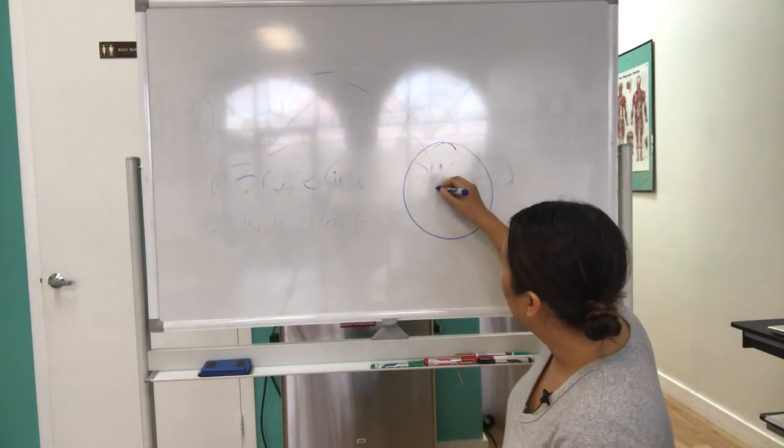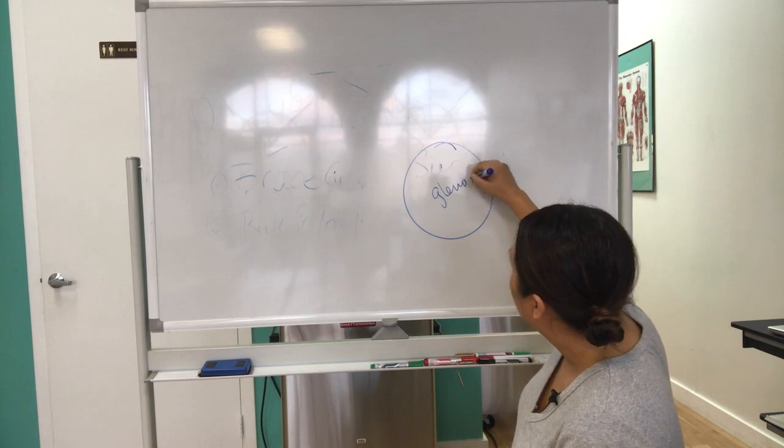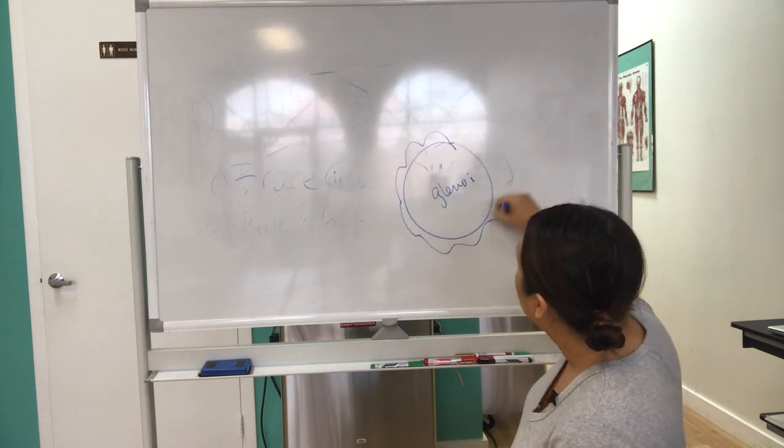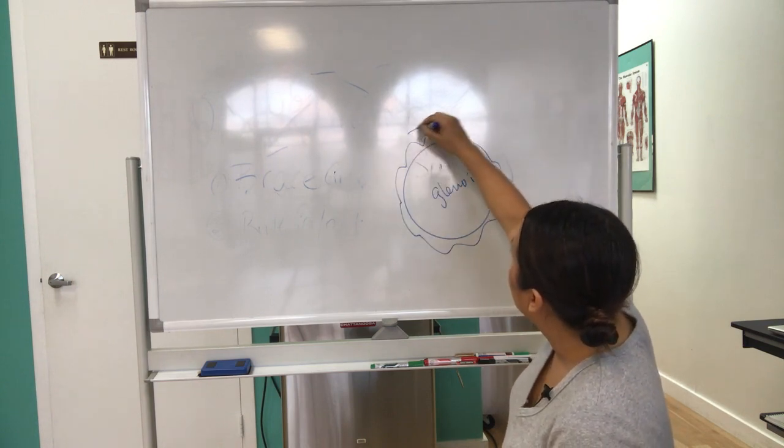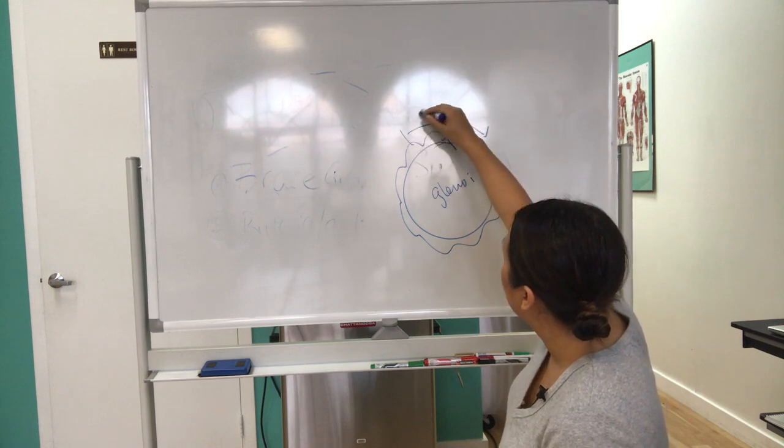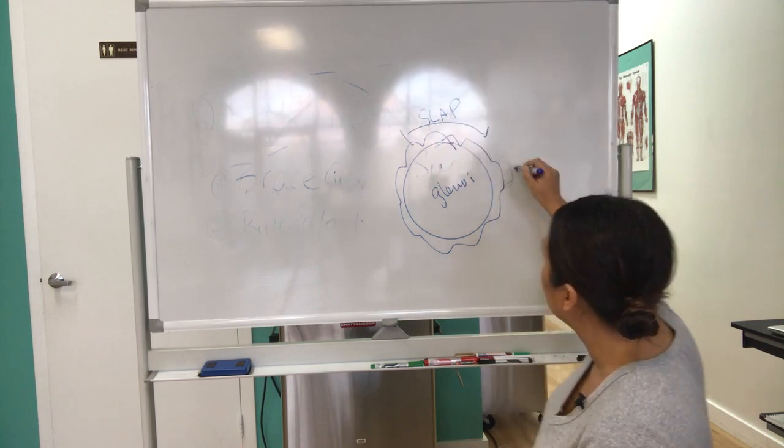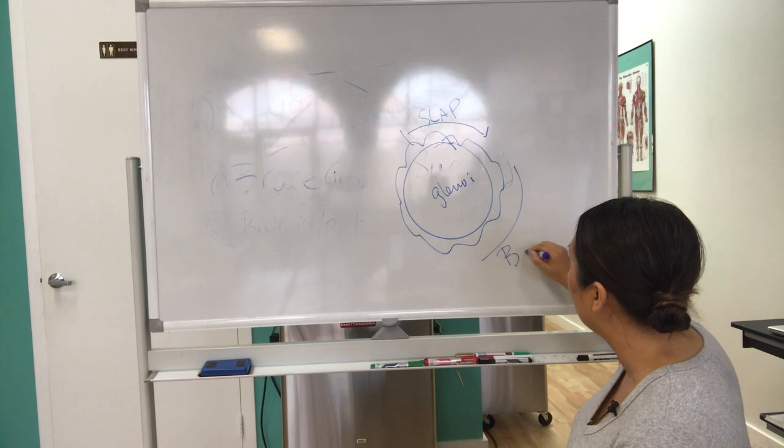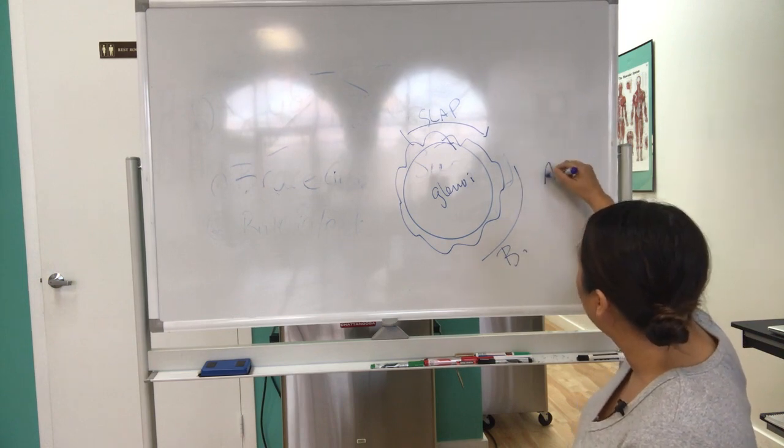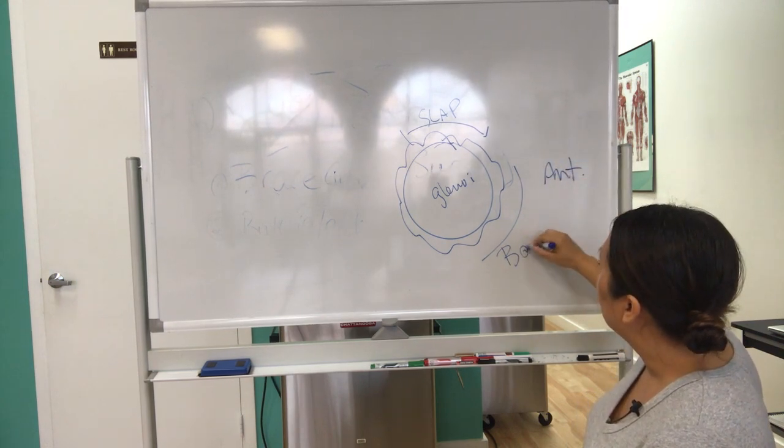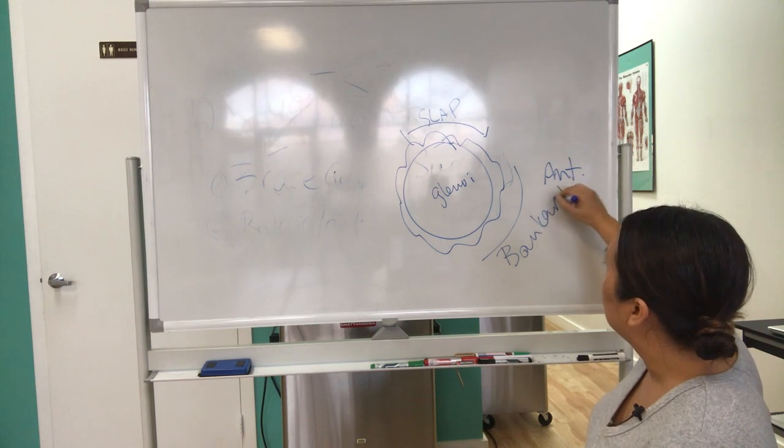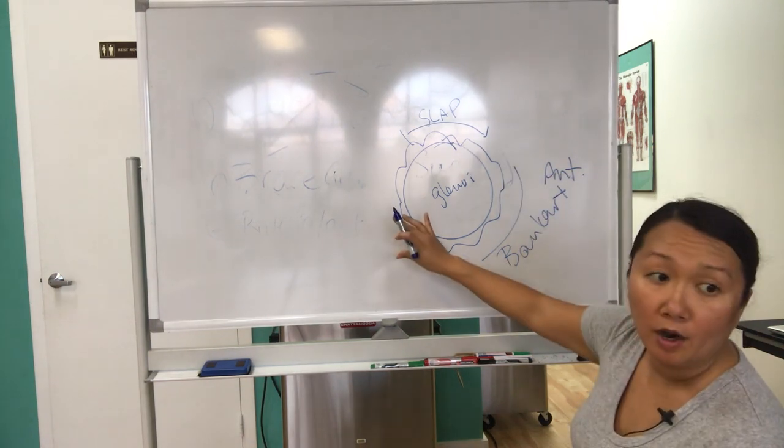So here's your glenoid, and then here's your labrum. At the very top is where you'll have like a SLAP lesion, and then at the Bankart on the anterior side, you'll have a different type of labrum tear depending on where it is.